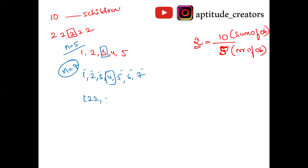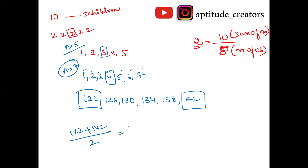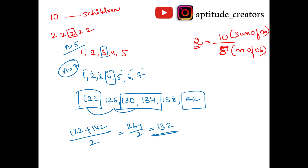Similarly, if the question gives: 122, 126, 130, 134, 138, 142 — what is the average? Most people calculate sum divided by number of observations, but the shortcut is: first number plus last number divided by two. 122 plus 142 divided by two gives 264 divided by two, which is 132. Or calculate the middle two numbers divided by two — also gives 132. This is applicable only when the difference is the same, i.e., numbers are in arithmetic progression.